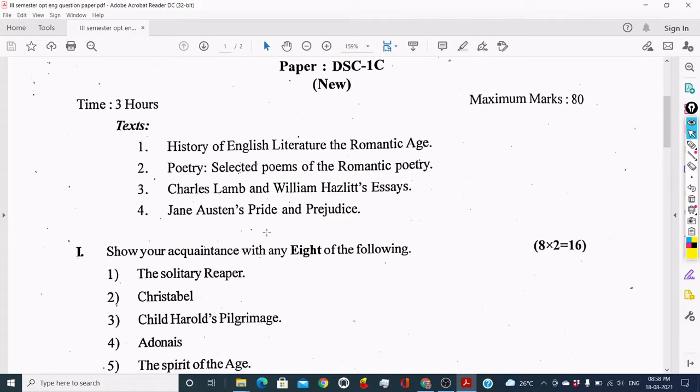This is the syllabus: History of English Literature, The Romantic Age, Selected Poems of the Romantic Poetry, Charles Lamb and William Hazlitt's Essays, Jane Austen's Pride and Prejudice.